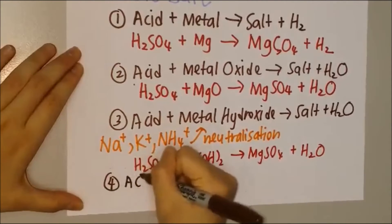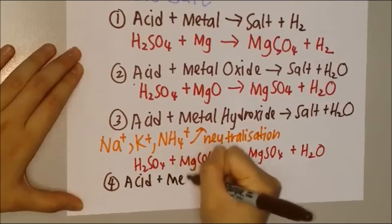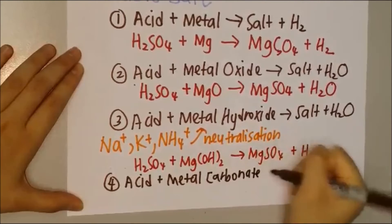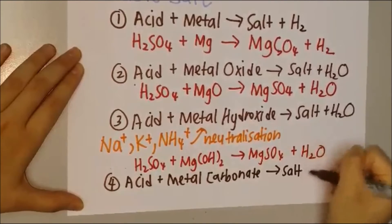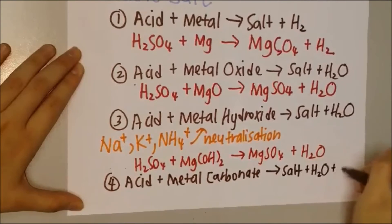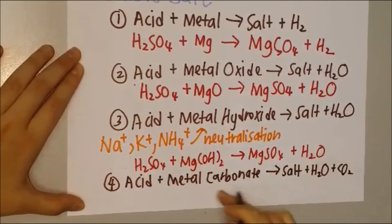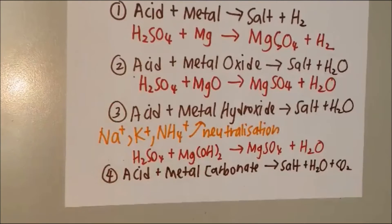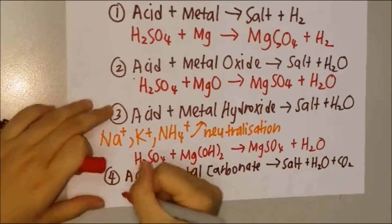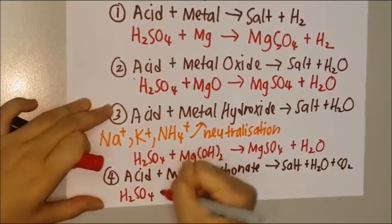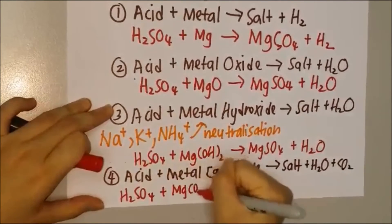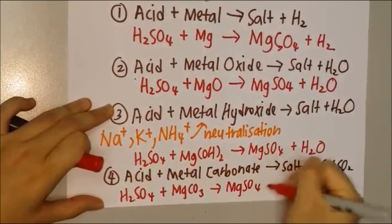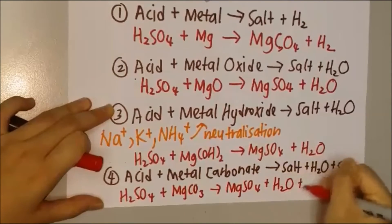For the last method, you can prepare salts through acid reacting with metal carbonate to form salt, water, and carbon dioxide gas. Since it involves carbonates, carbon dioxide gas is produced. For example, sulfuric acid reacts with magnesium carbonate to form magnesium sulfate, water, and carbon dioxide.